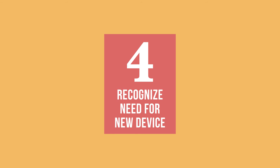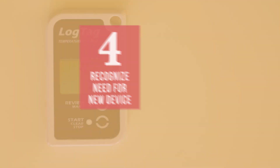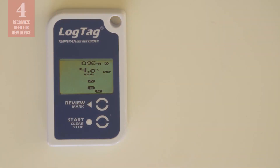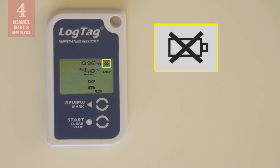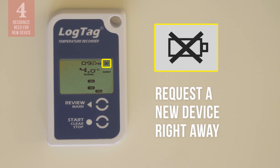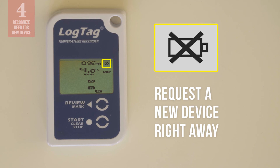Now let us look at the last important task: to recognize when you need a new device. If you see a symbol on the screen of your device that looks like this, it means the battery in your device is running low. That means you need to request a new device right away, since you cannot replace the battery in a log tag.